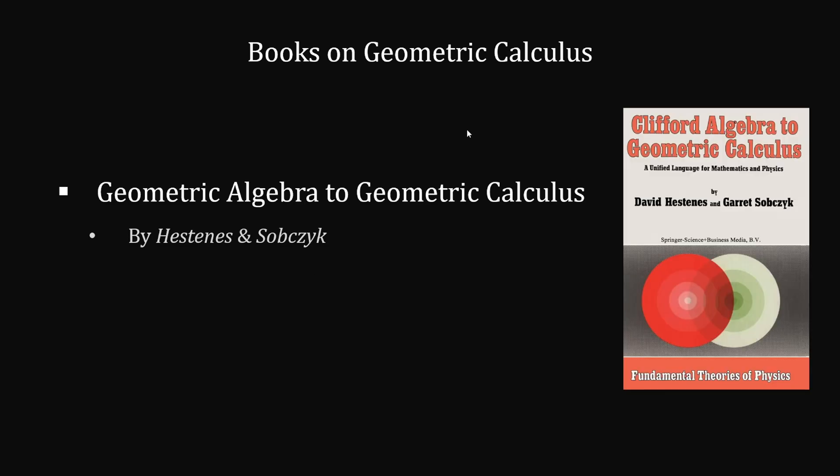The essential textbook for anyone who wants to learn geometric calculus is Geometric Algebra to Geometric Calculus by Hestenes and Sobczyk. While the formatting makes this book seem daunting, it's really understandable. However, I will say that some of the derivations skip steps that aren't super obvious, so this book sometimes makes you work very hard to understand.